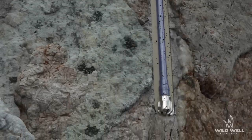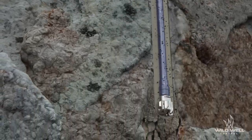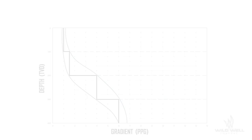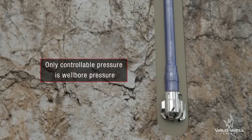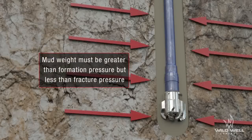Each formation has a drilling window that drillers must be aware of as they drill deeper. A drilling window is the space between formation pressure and fracture pressure. It is most important to understand that formation and fracture pressures are beyond your control. What is in your control is hydrostatic and bottom hole pressure. Drilling fluid must be heavy enough to hold back formation pressure, but not so heavy that it causes the formation to fracture.